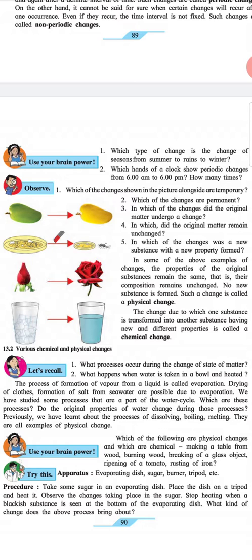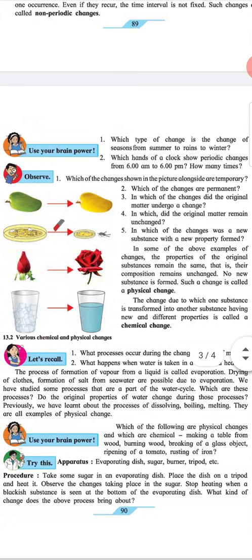Observe: Which of the changes shown in the picture alongside are temporary? Which of the changes are permanent? In which of the changes did the original matter undergo a change? In which did the original matter remain unchanged? In which of the substance was a new substance with a new property formed?